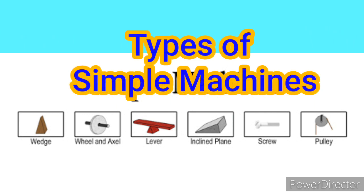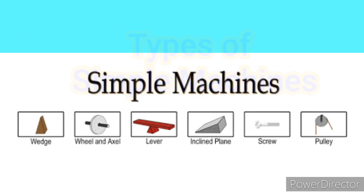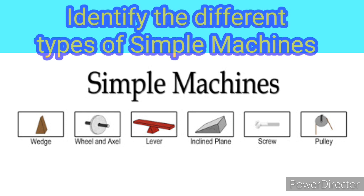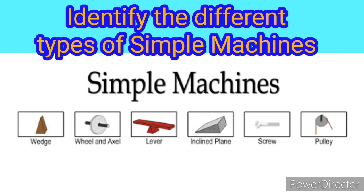Hi, today's discussion is all about types of simple machines. At the end of this video, you will be able to identify the different types of simple machines. The different types of simple machines are lever, pulley, wheel and axle, screw, wedge, inclined plane, and gear.